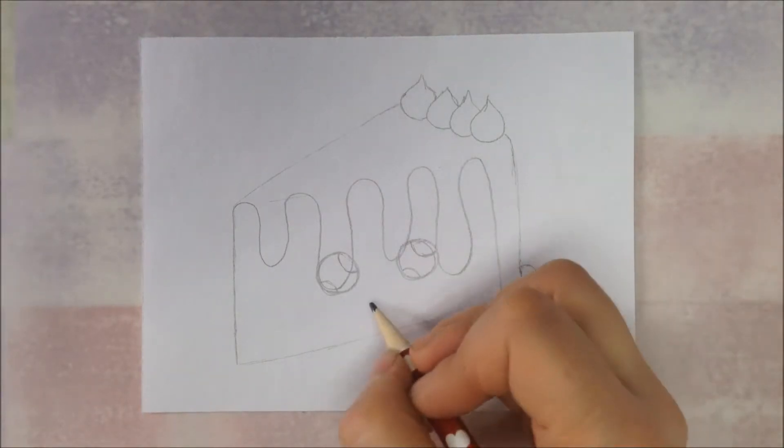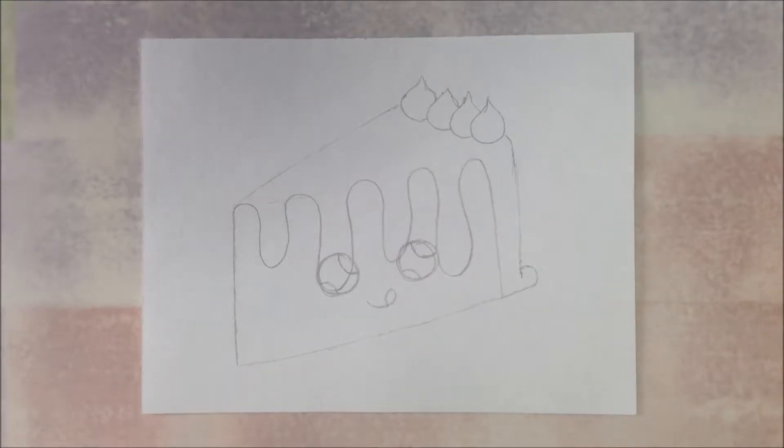And then for the mouth, we're going to do a cute little curve with a loop, and that's going to make it look like his tongue is sticking out.